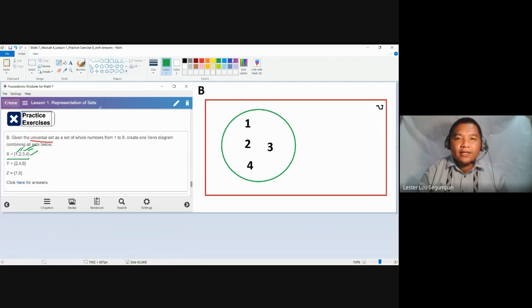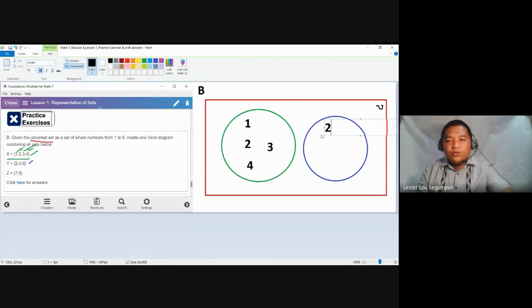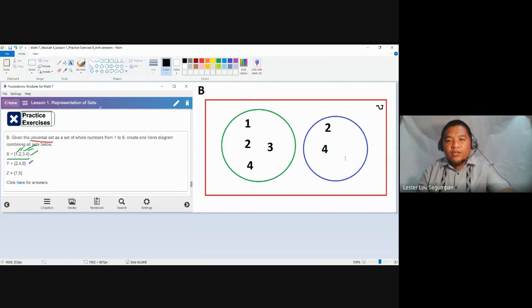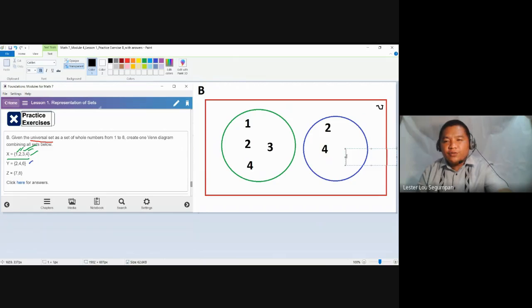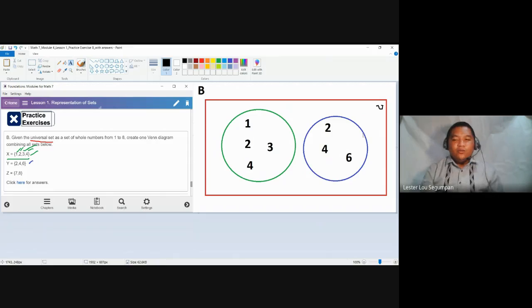So let's proceed to set Y, containing 2, 4, 6. So you could actually get here, right here again. And then circle. And then you are going to place here the elements 2, 4, 6. You can simply do that. 2, 4, 6. No problem. However, there is a big problem now.